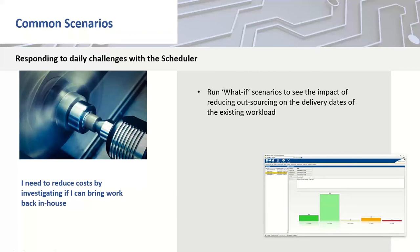Scenario seven: if you manufacture in-house but at times also subcontract, and in the current economic climate you want to reduce costs by bringing some work back in-house — what impact would that have? Would it push delivery times out? Using what-if scenarios, you can change the routing on a part from a subcontract external operation back to an in-house resource, bring it in, see the consequence, and understand how much capacity you actually need. It's all about flexibility and having the knowledge to make informed decisions — without doing these what-ifs, you can't really know what the best thing to do is, and doing that manually is very difficult.